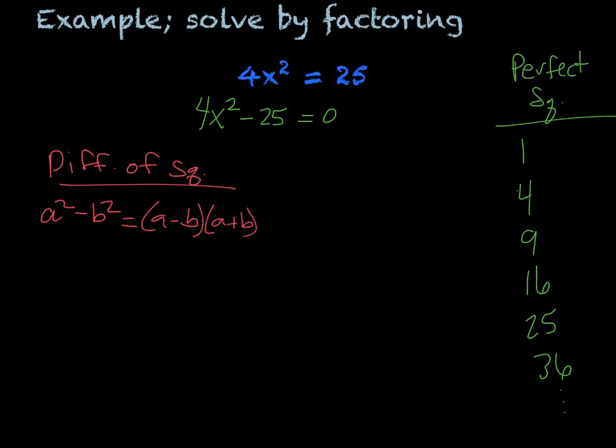So that's what I actually have here. If I consider my a squared, or my a to be 2x, 2x squared is 4x² minus 5 squared equals 0. So now I can see that I have a difference of squares with a equal to the 2x and b equal to the 5.